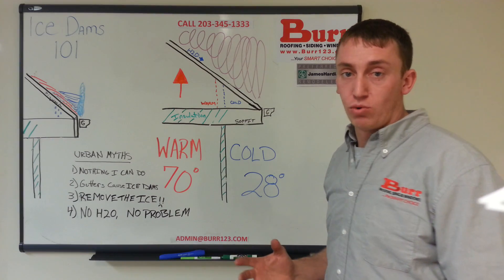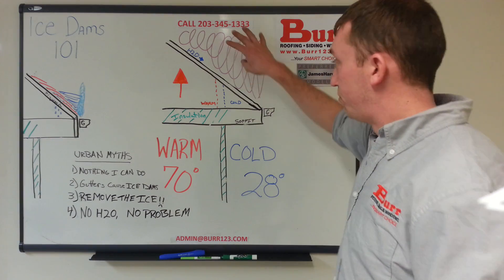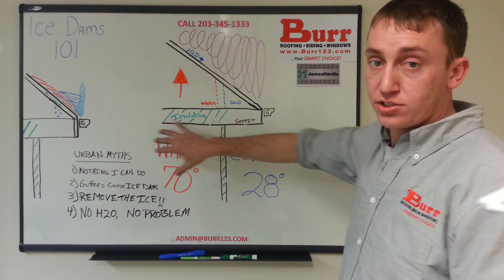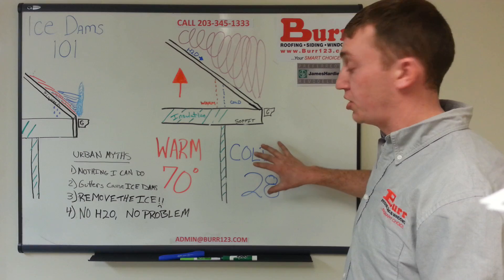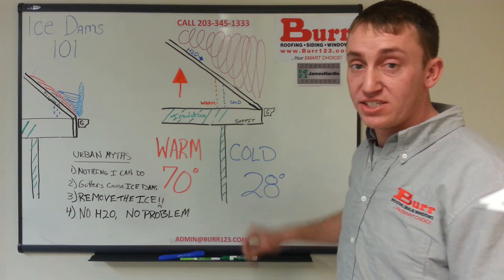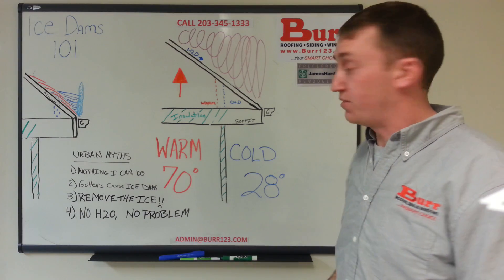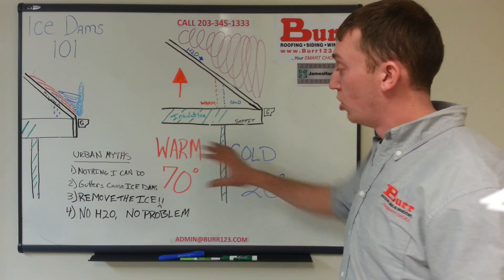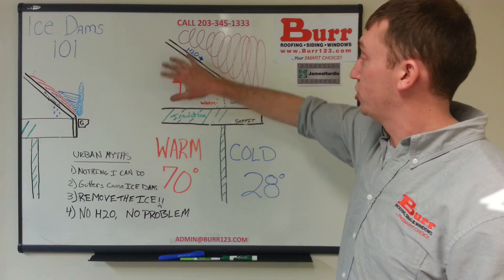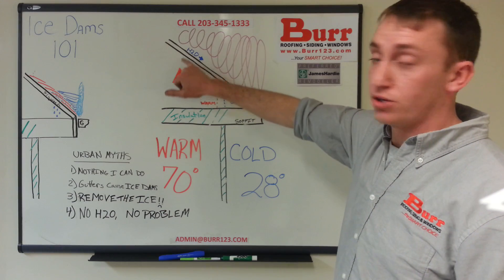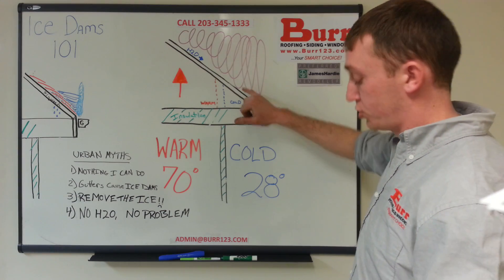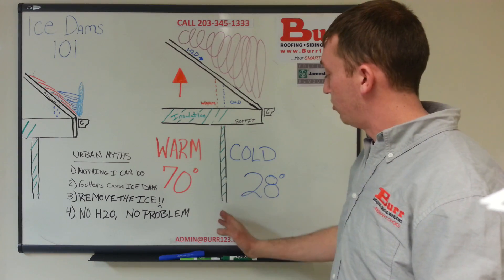We're here with Ice Dam 101. There's snow up on the roof, warm air inside your house, cold air on the outside. Upper 20s is the ideal temperature to find an ice dam. Warm air is going to rise through your insulation, melt the snow sitting up on your roof, turn into water. Water is going to flow downhill.